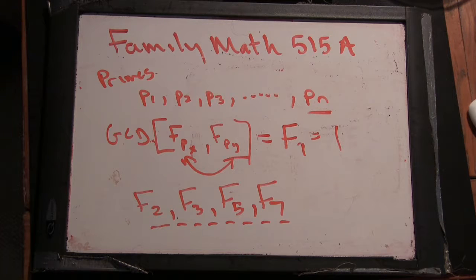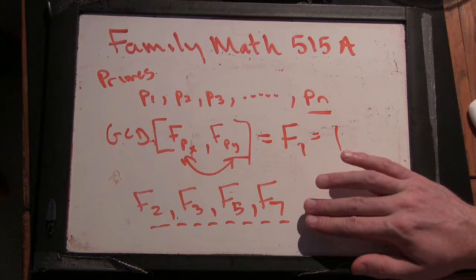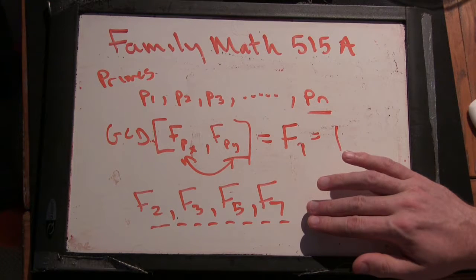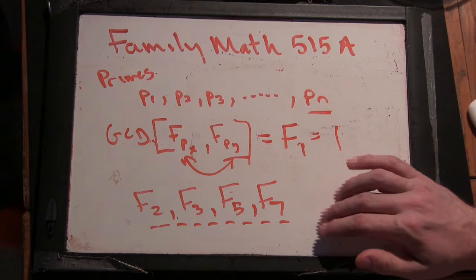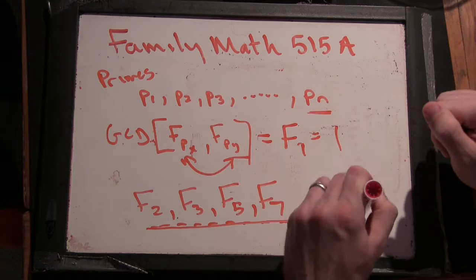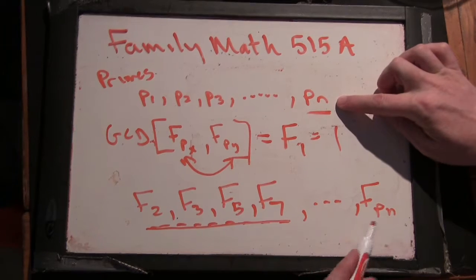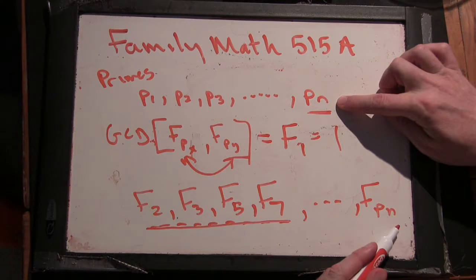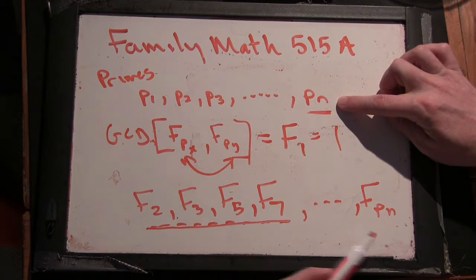So now here's where the proof gets a little bit tricky. All we have to do to show that there are an infinite number of primes is to show that eventually there are more primes in this list going up to pn when I factor these.